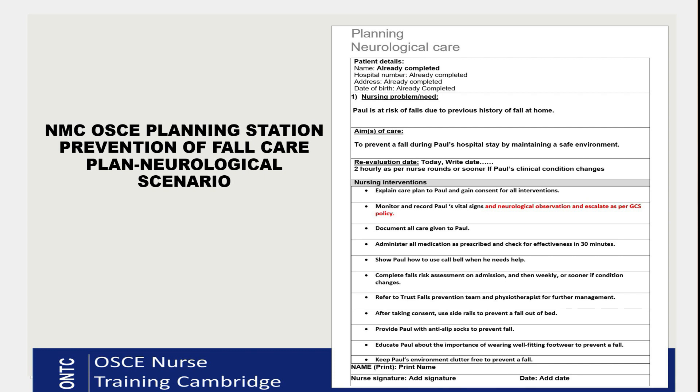For the re-evaluation date, this is about how often we're going to check on Paul regarding risk of fall. Write today's date — which will be your exam date in day/month/year format. We'll check on him every nursing round, so write: 'Two-hourly as per nurse rounds, or sooner if Paul's clinical condition changes.' If he's getting out of bed frequently, you may need to increase monitoring frequency.